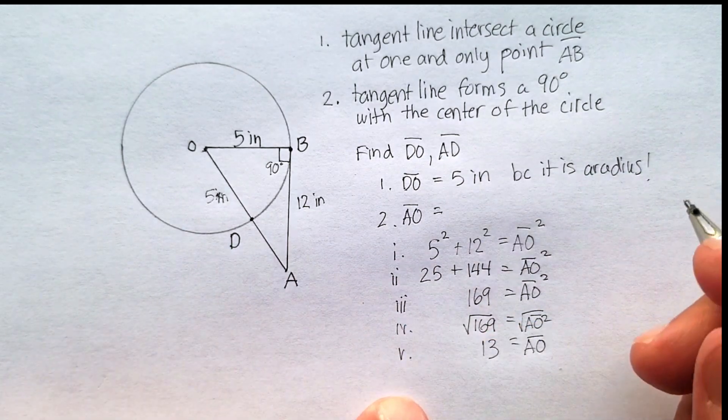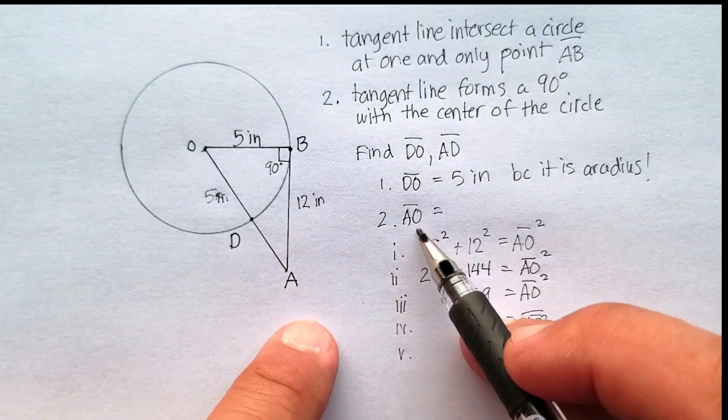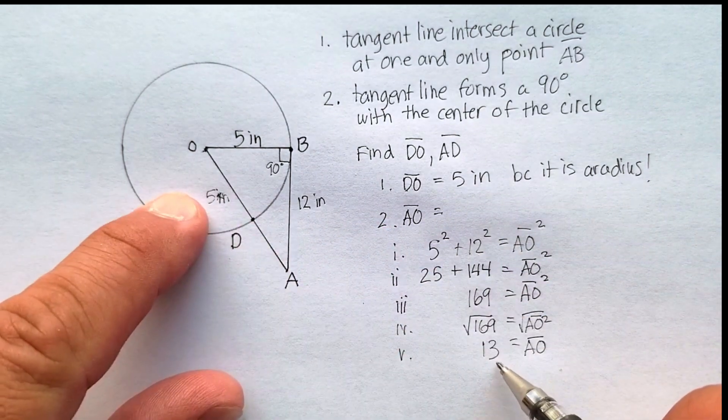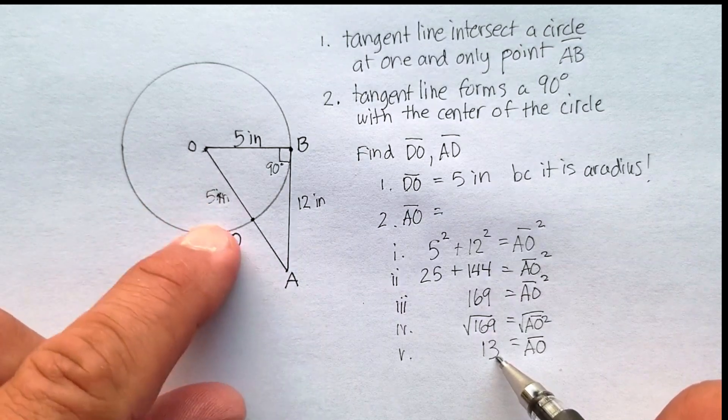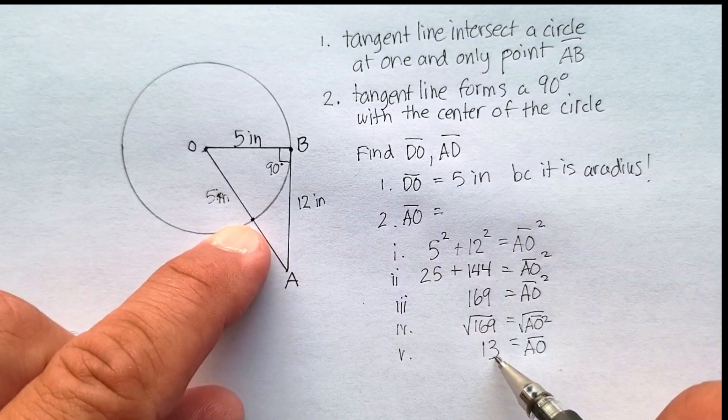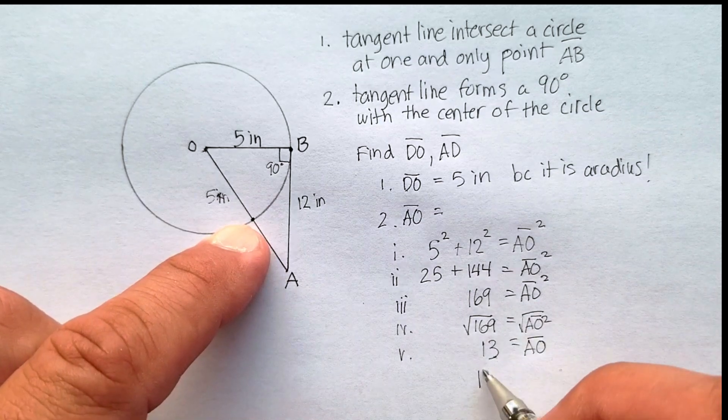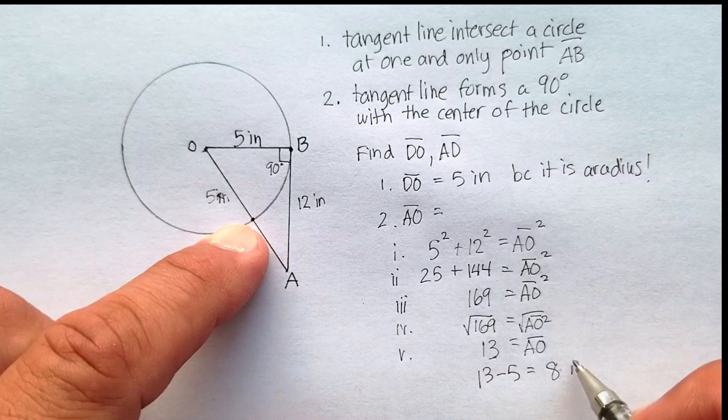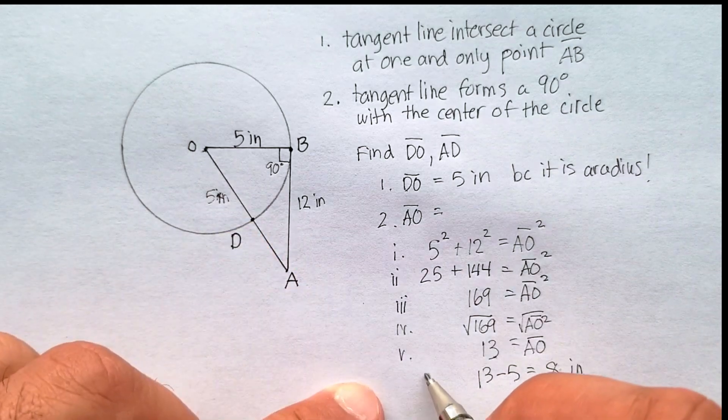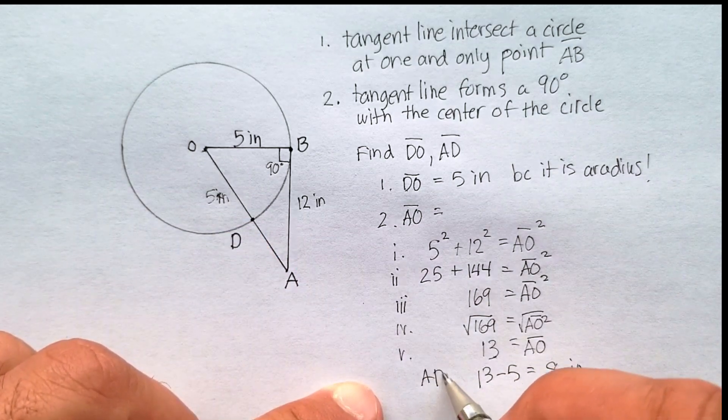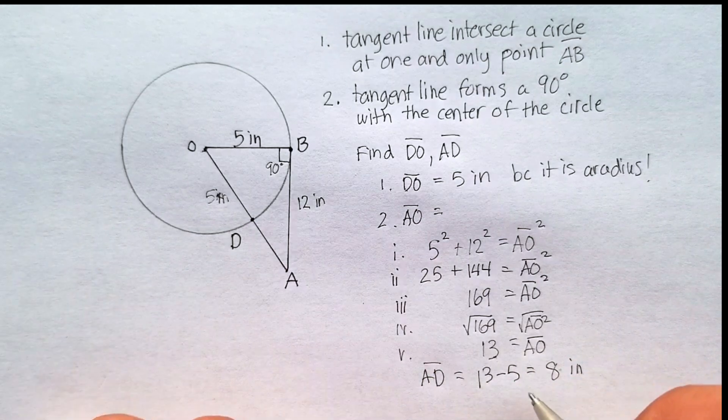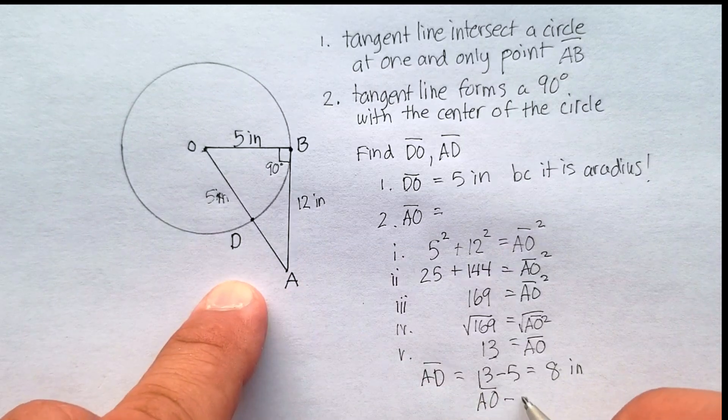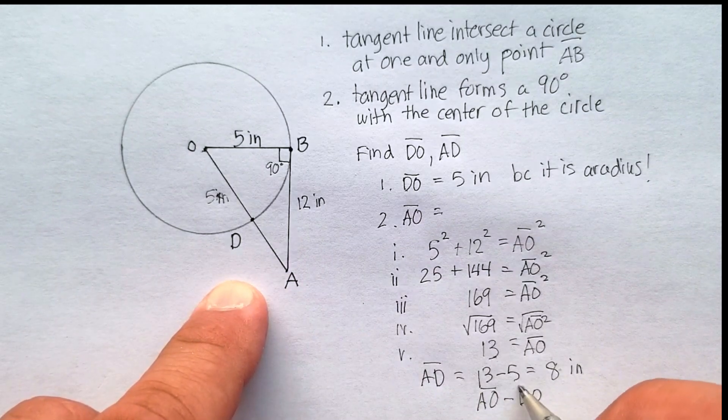That's great information, because now we can find that A-D, it would be 13 minus this 5. So this line segment, the distance from A to the closest point in the circle, will be 13 minus 5, or 8 inches. And let's just put that in there. Line segment A-D is equal to this, which is just A-O minus D-O.